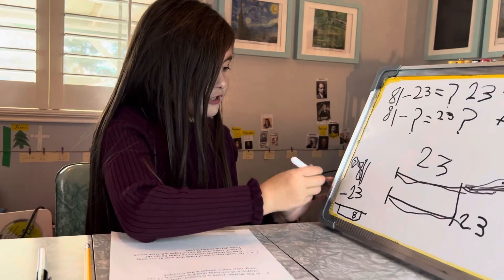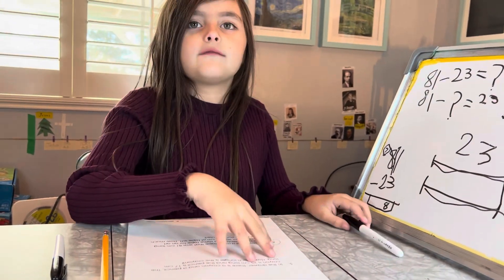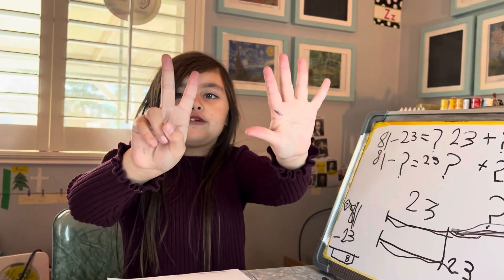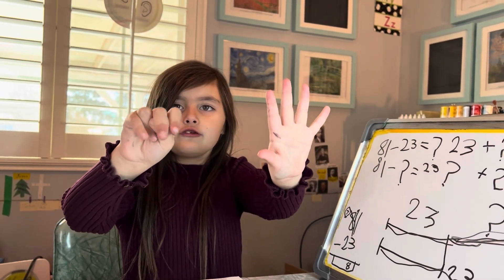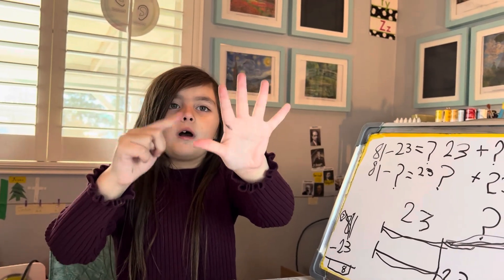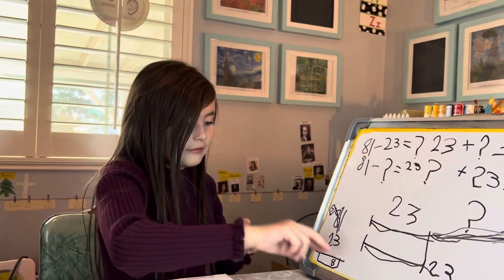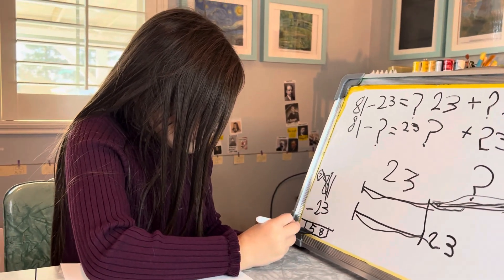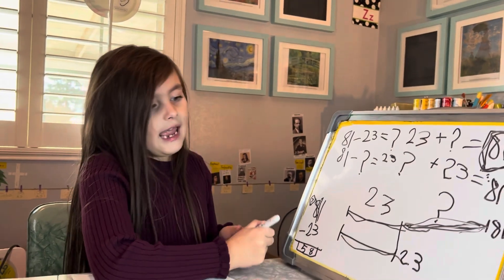Seven take away two. Let's do it with our fingers. Seven on your fingers. Take away two. One, two. Now we have one, two, three, four, five left. And the answer is 58.